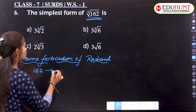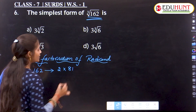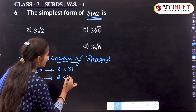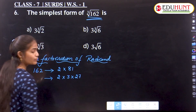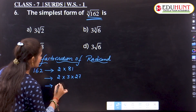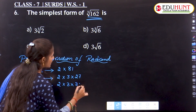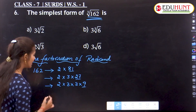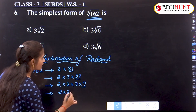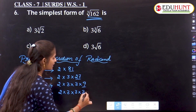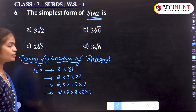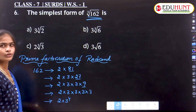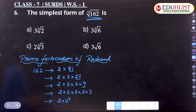The prime factorization of 162: 162 = 2×81, then 81 = 3×27, 27 = 3×9, and 9 = 3×3. So the complete prime factorization is 2×3⁴.